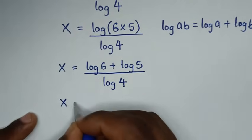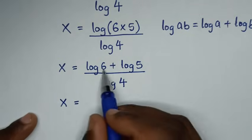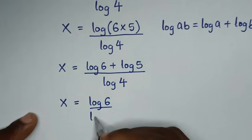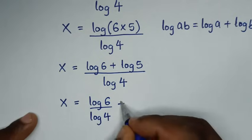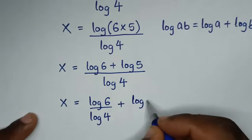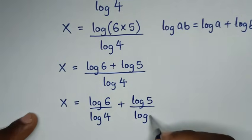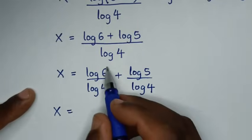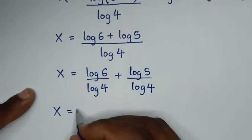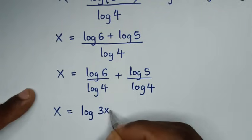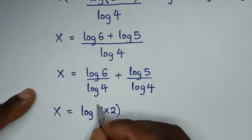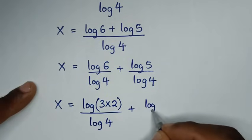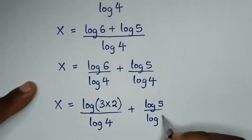This part here is in the form of log of a times b, which is equal to log of a plus log of b. So here log of 6 times 5 it will be log of 6 plus log of 5, then over log of 4. So it will be log of 6 over log of 4 plus log of 5 over log of 4.